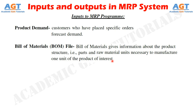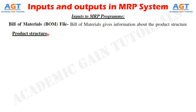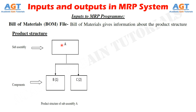The Bill of Materials file includes product structure. Product structure shows a product build-up — it shows diagrammatically the components required to assemble it, their numbers, and the sequence of assembly. For example, sub-assembly A is made by joining one unit of component B and two units of component C, as shown in this diagram. Therefore, if 100 units of sub-assembly A are to be manufactured, 100 units of component B and 200 units of component C are required.